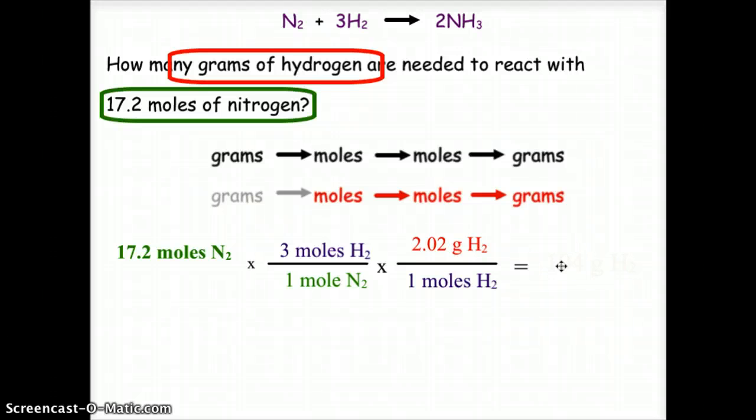When we do the multiplication on this, we get 17.2 times 3 times 2.02, and that gives us a final solution of 104 grams of H2, seeing as we have three significant digits in the question, and therefore we need three significant digits in the answer. So I hope this was helpful for you to see how to do a moles to grams stoichiometry conversion.